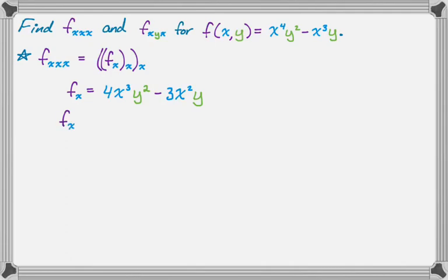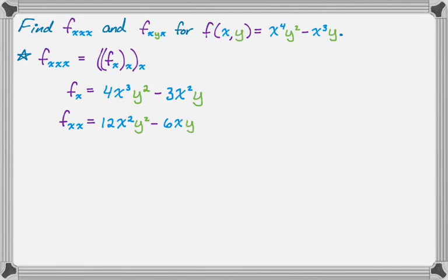Partial x,x — kind of like the second derivative. The derivative of 4x cubed is 12x squared, then y squared is just a constant, minus the derivative of 3x squared which is 6x, and then y is a constant. So we're done with that part.